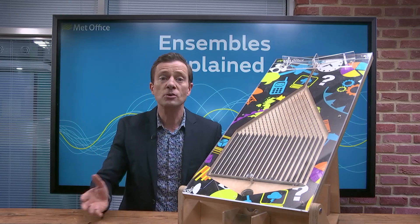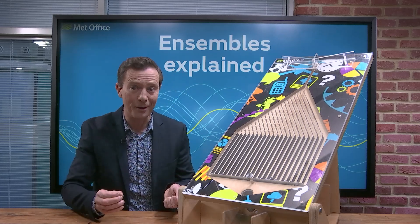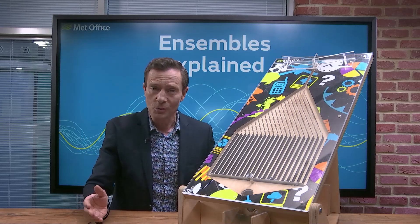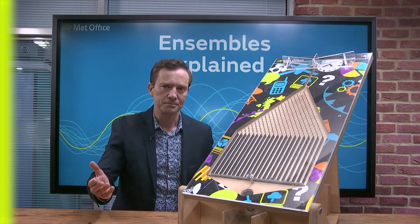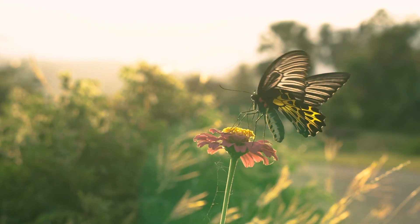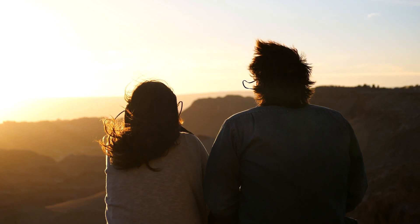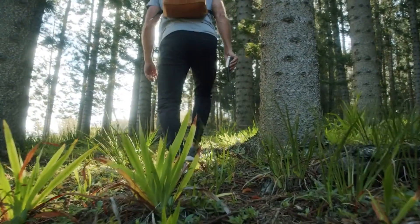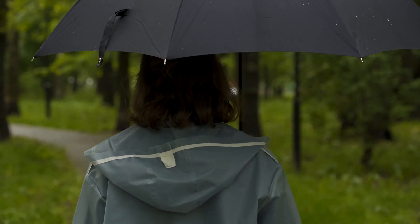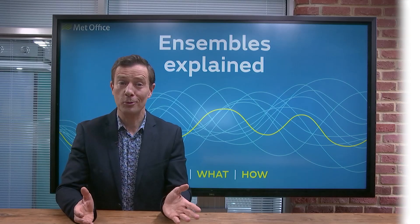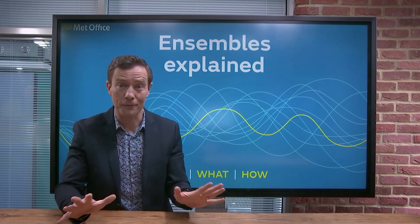The weather depends on many things, many of which we know an awful lot about, but some of which we can't possibly know. This is where the butterfly comes in. Every time a butterfly flutters, or a seagull flaps its wings, or indeed every time you and I go outside, we are moving or altering the atmosphere simply by interacting with it in a tiny way. Of course, most of these tiny differences make no difference whatsoever to the weather.